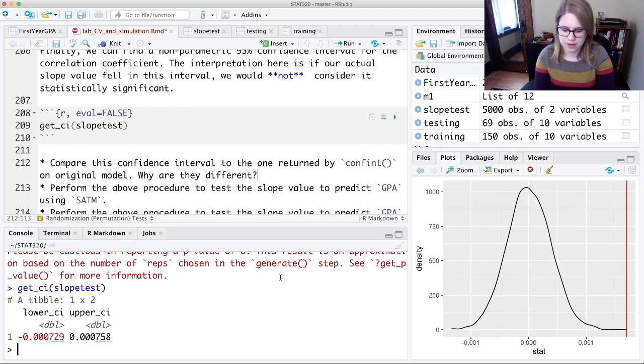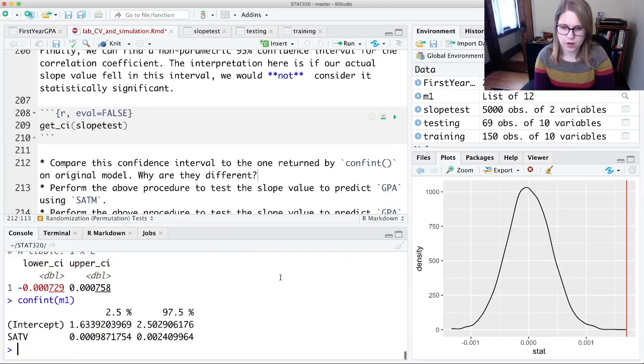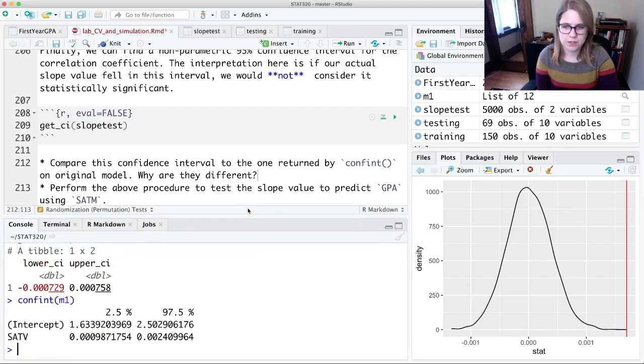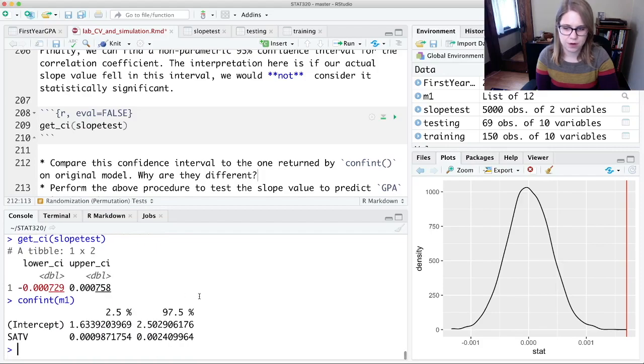If we wanted to, we could look at the conf int on M1. And that confidence interval is going to be completely different because these are reasonable values we could have seen for the slope if there's actually something going on.